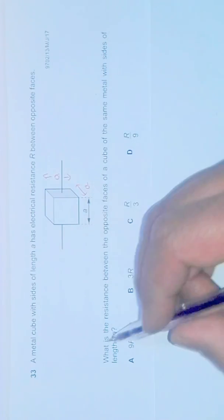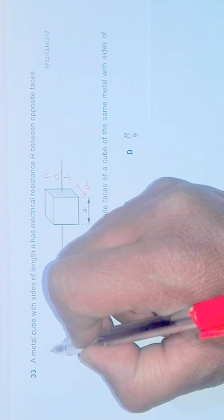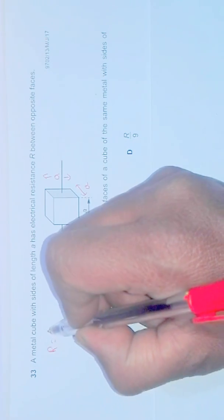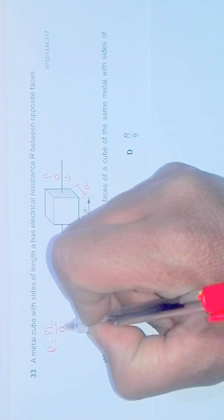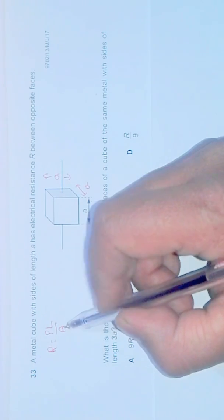Let's find the initial resistance. R equals rho L by A, where L is the length along which the current flows and A is the cross section.